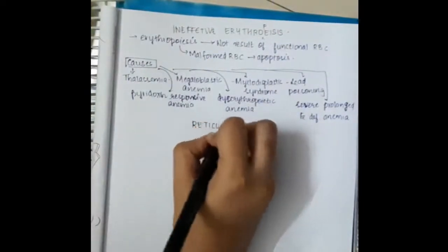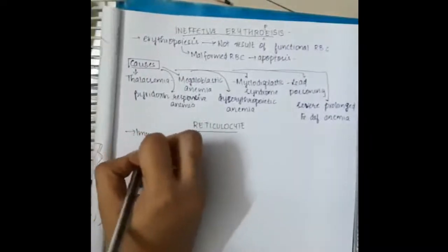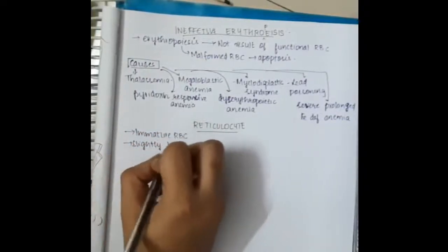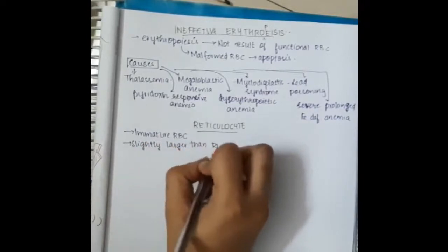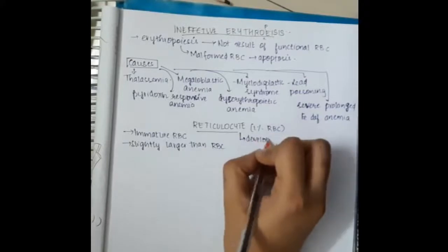First, we will learn some points about reticulocyte. Reticulocyte is present in almost 1% of RBC. It is immature RBC, slightly larger than normal RBC.